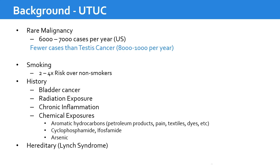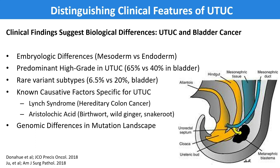Upper tract disease differs from lower tract disease. It is a different disease genetically and embryologically — the bladder comes from the cloaca (endoderm), while the upper tract develops from the mesoderm. You'll see more high-grade disease in upper tract than in the bladder. It's rare to find subtypes like micropapillary in upper tract, where we see them in bladder cancer. Some causative factors like aristolochic acid and arsenic cause upper tract disease but not bladder cancer.